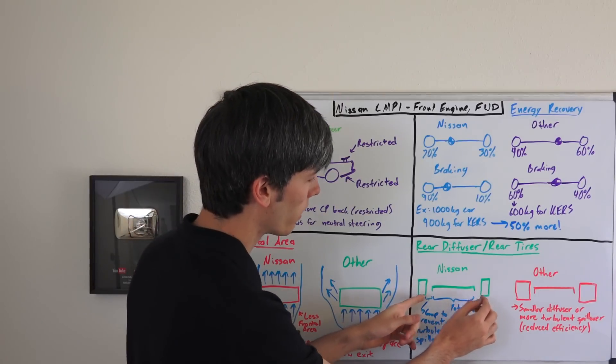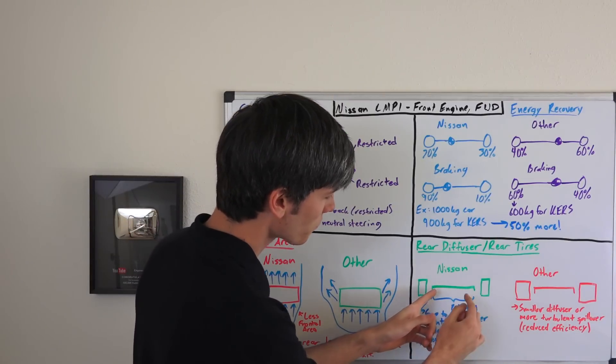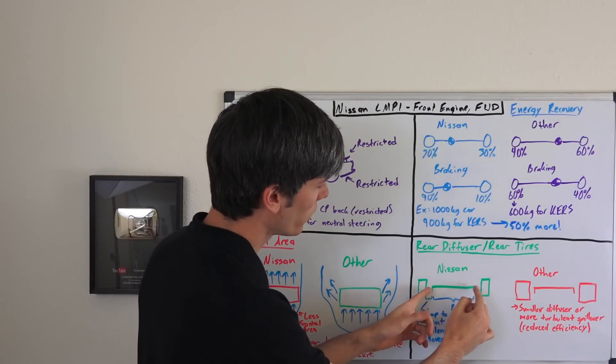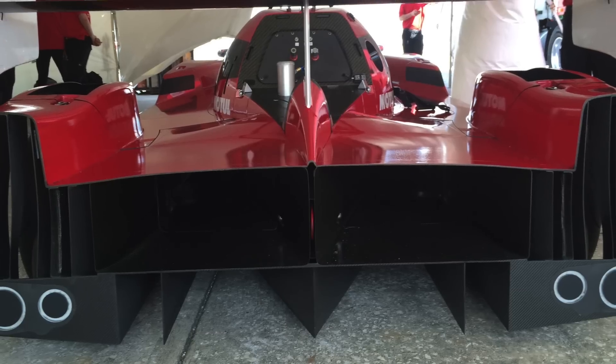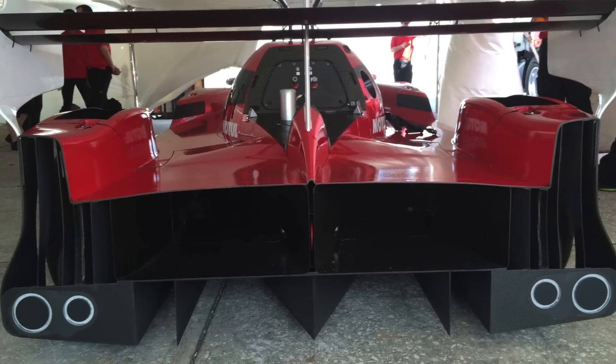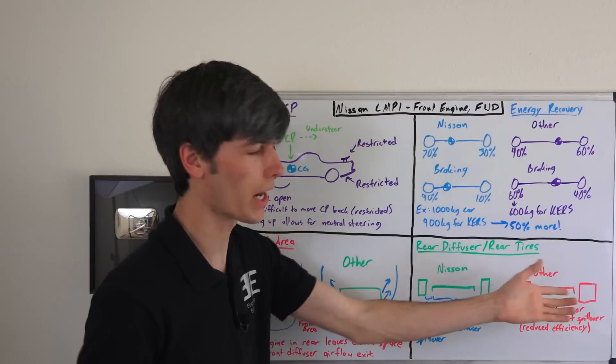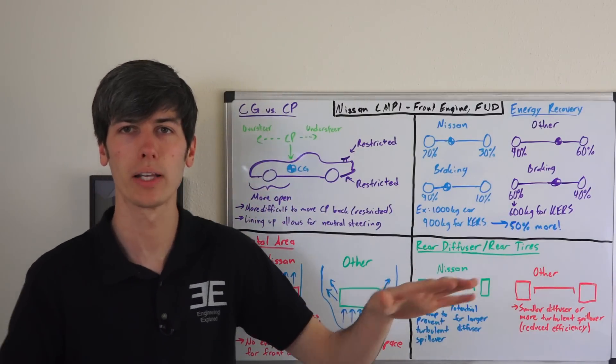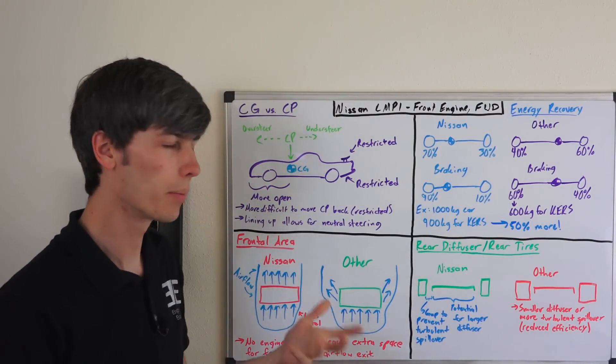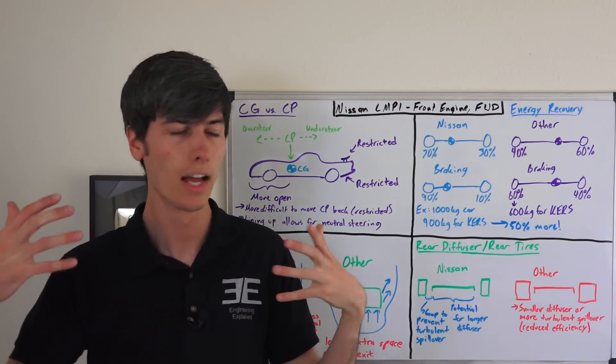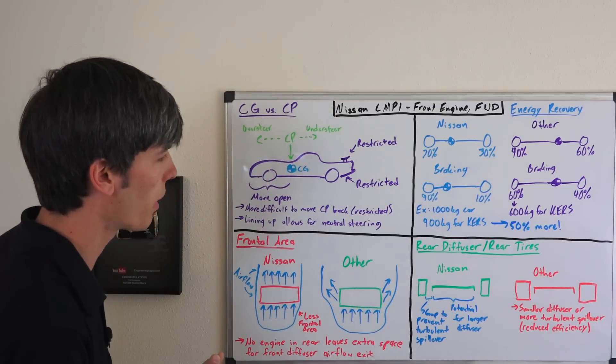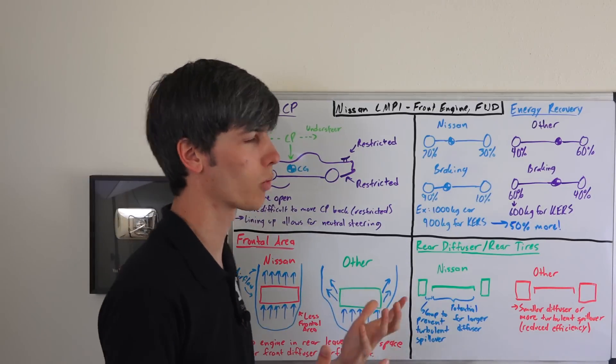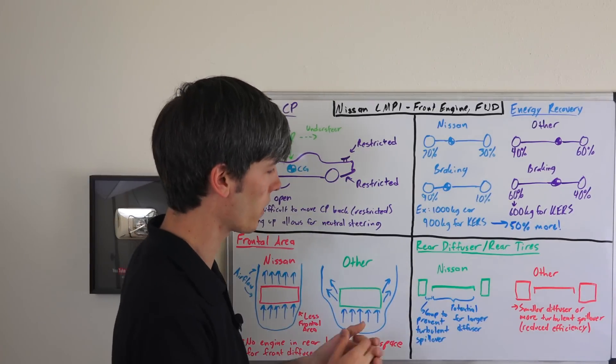So because their tires are more narrow, two things can happen. One, you can actually increase the range of your diffuser, so you could use a larger diffuser than if you were using wider tires, which everyone else is doing. All the other teams are running 14 inch tires in the rear, because they're rear wheel drive, and it makes sense from a grip perspective to have as large as possible tires back there, based on their weight distributions and the drive train of the vehicle.